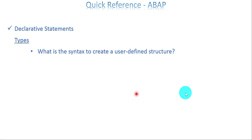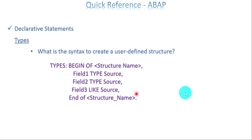What is the syntax to create a user-defined structure? Very often we create a structure for a user-defined data type. The syntax is: TYPES followed by a user-defined name, then FIELD1, FIELD2, FIELD3 with TYPE or LIKE. Here also you can use either TYPE or LIKE — you need the technical aspects from the source, which can be a data element or a predefined data type. Then END OF the same structure name.